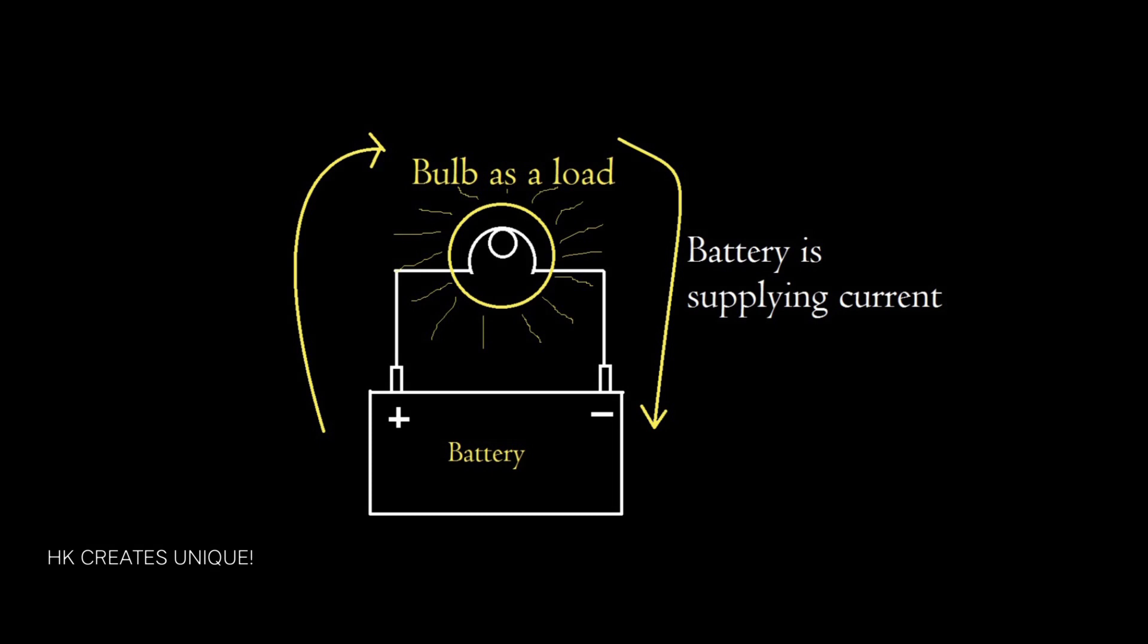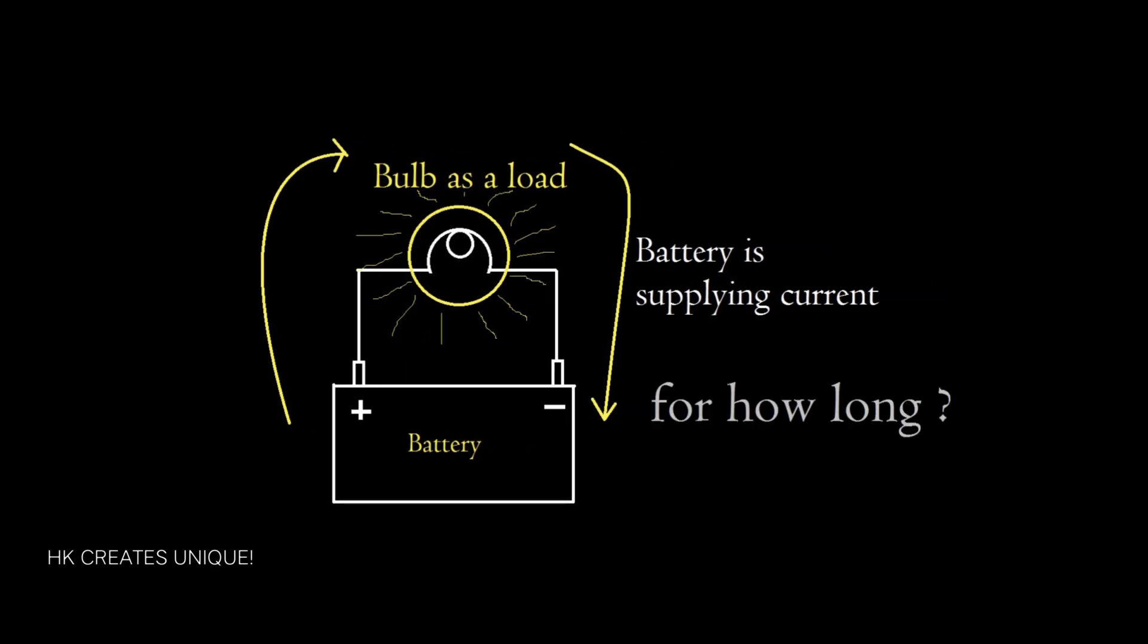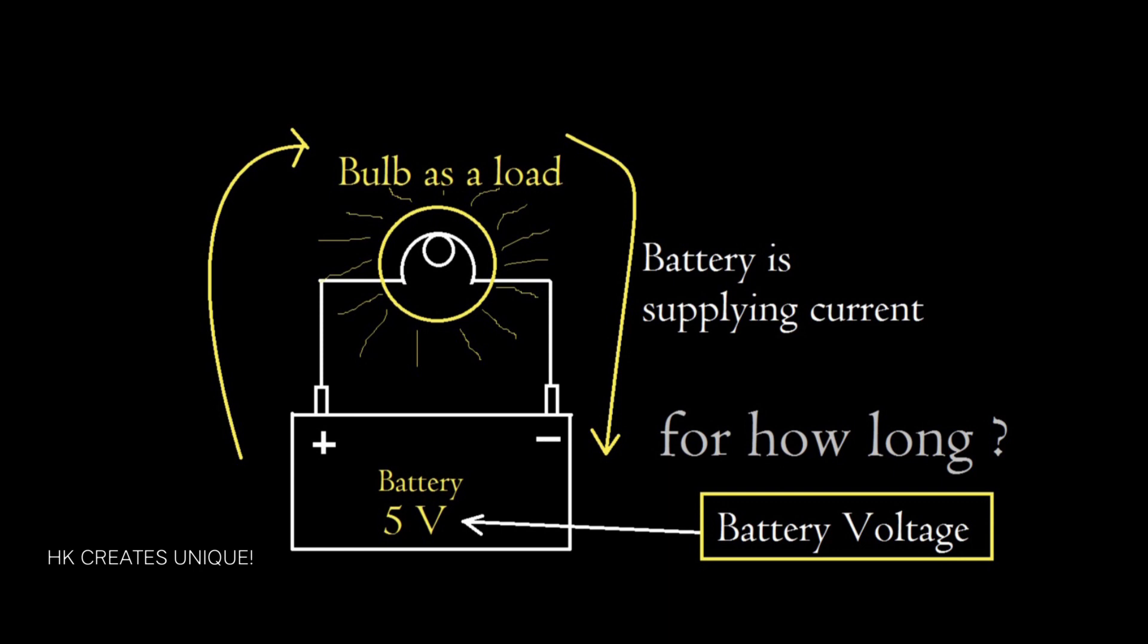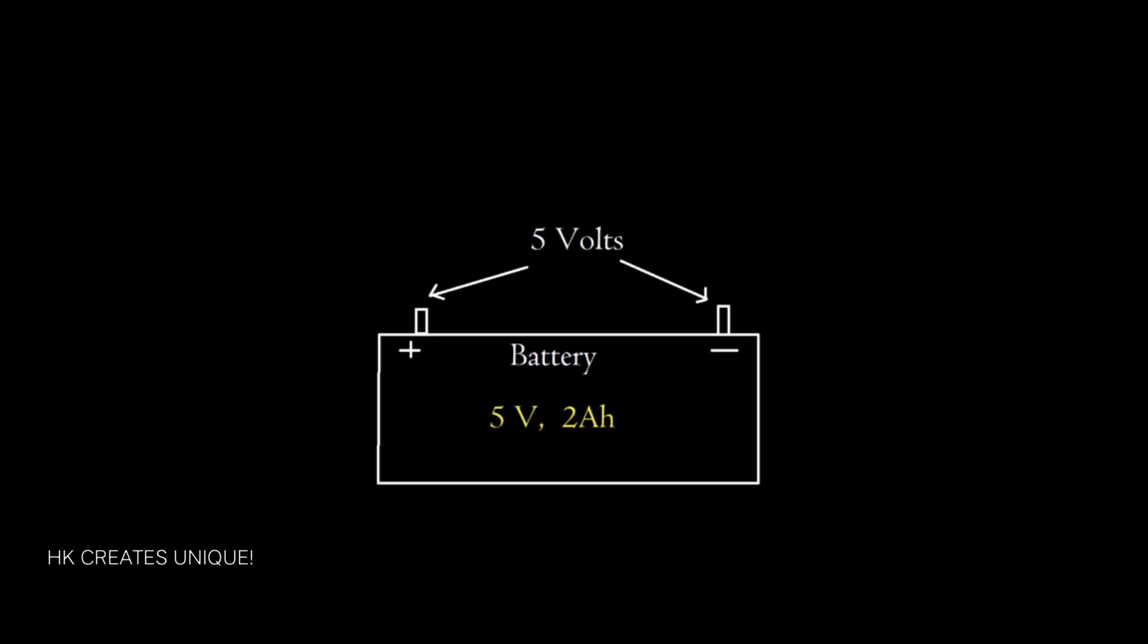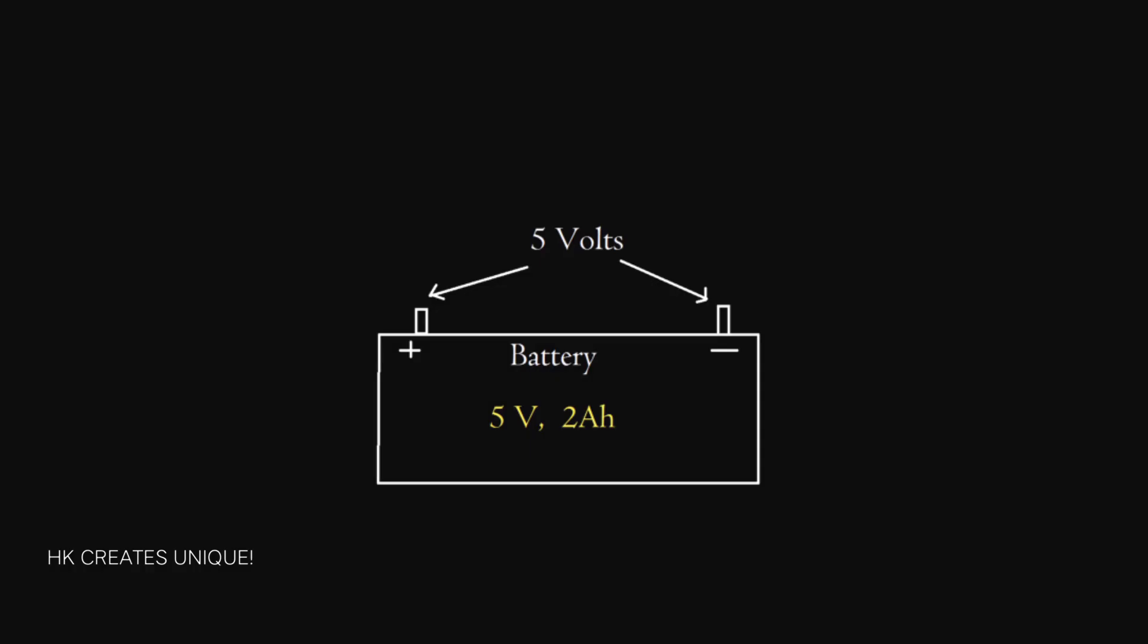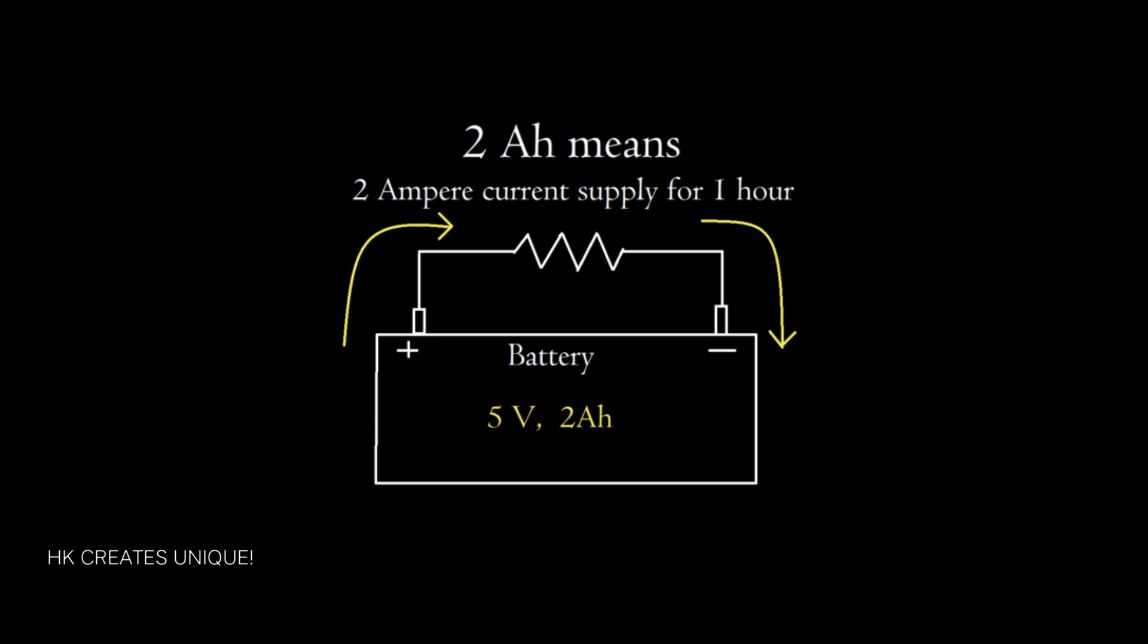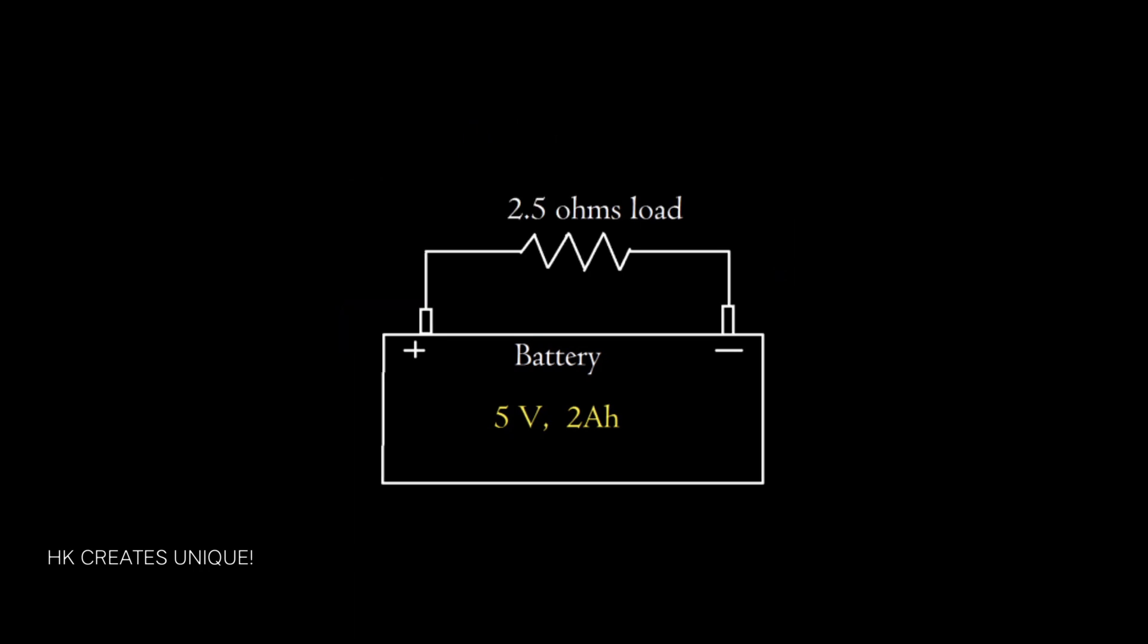Battery capacity is the measurement of how long a battery can supply current at the rated voltage when connected with a load. As an example, suppose I have a 5V battery with a capacity of 2Ah. Here, 5V is the voltage across positive and negative terminals. The capacity 2Ah means that the battery can supply 2A for 1 hour.